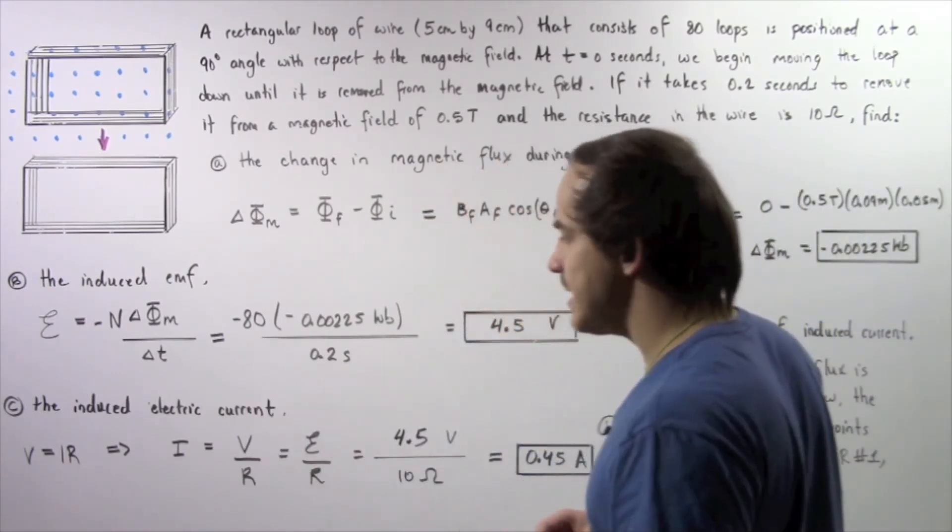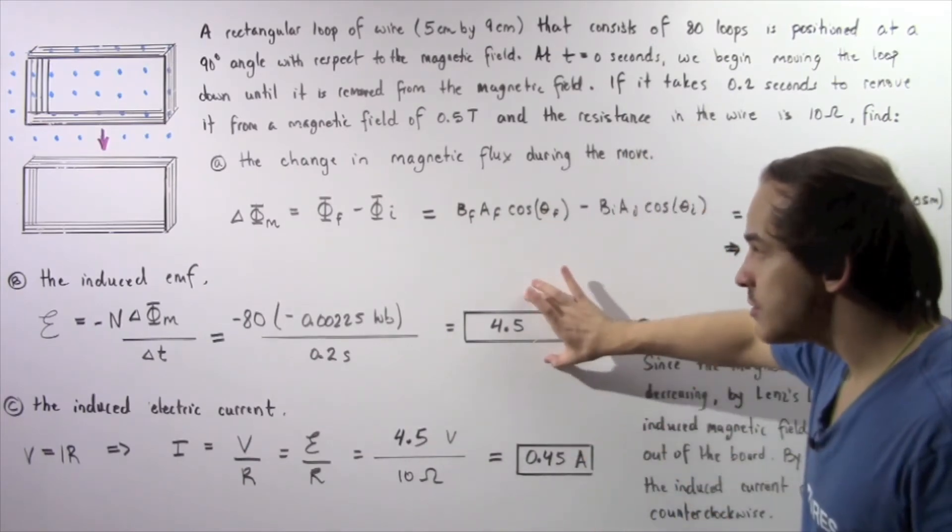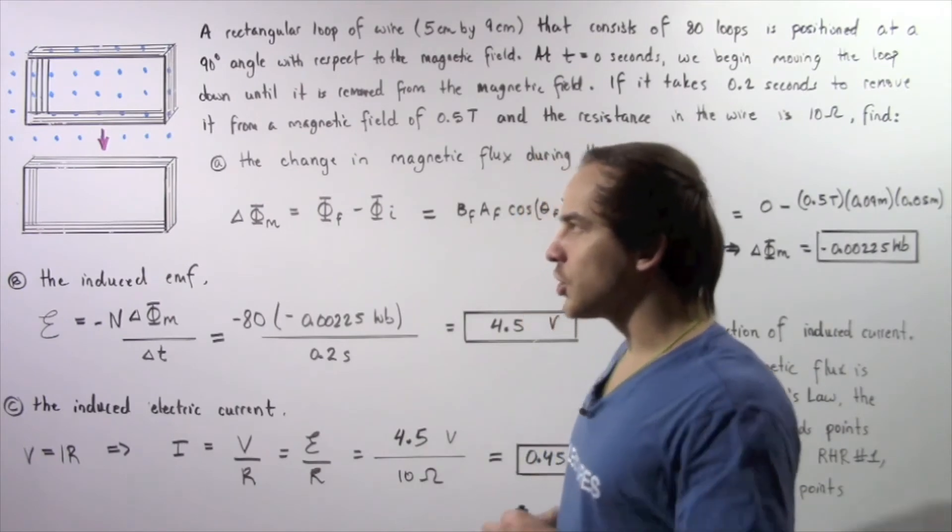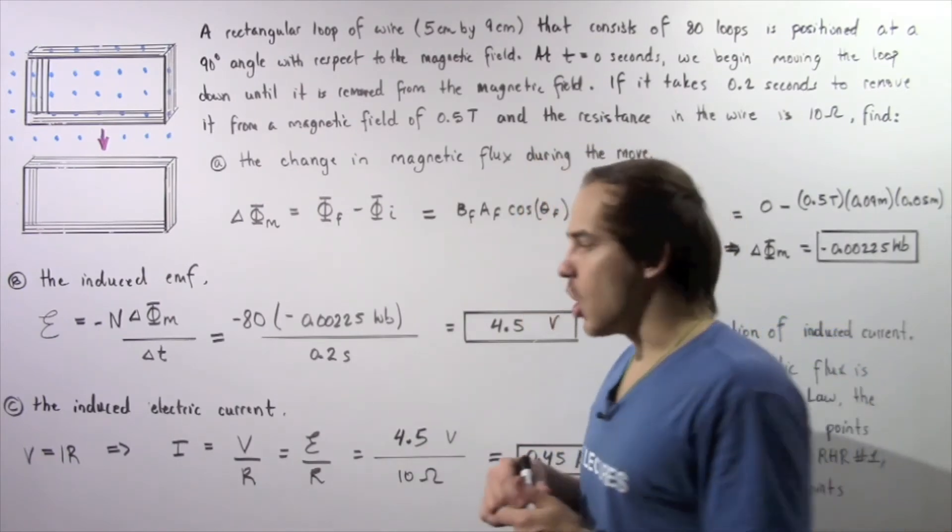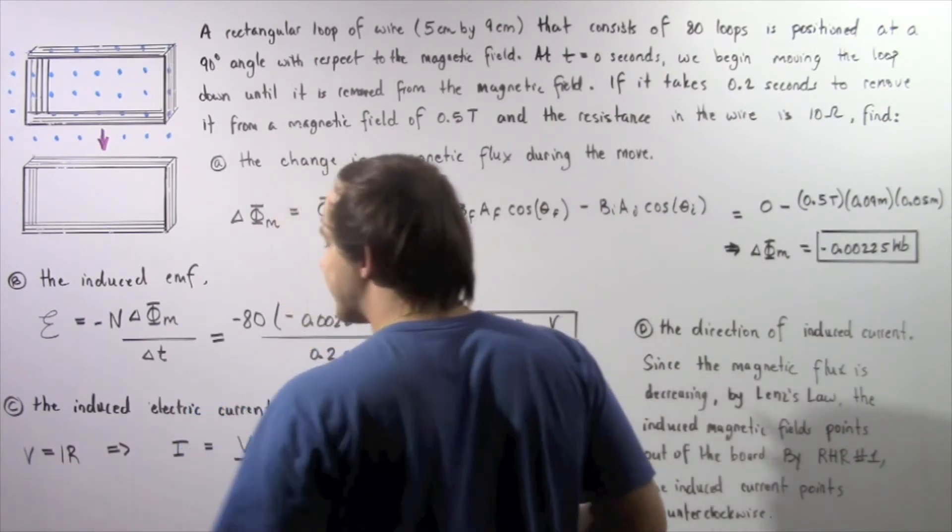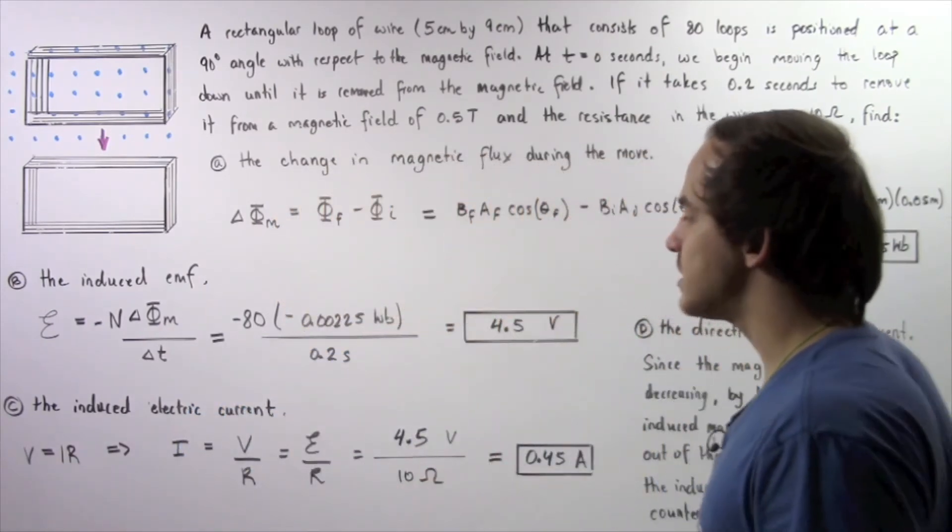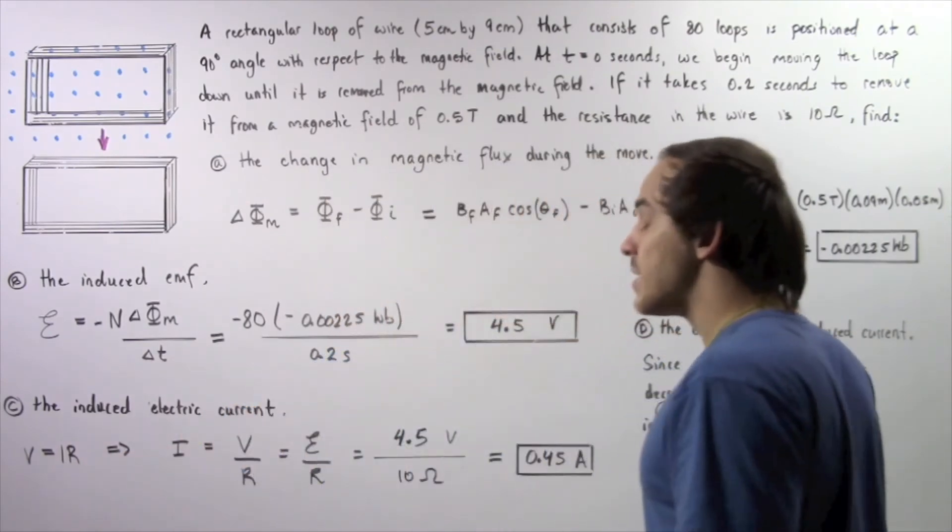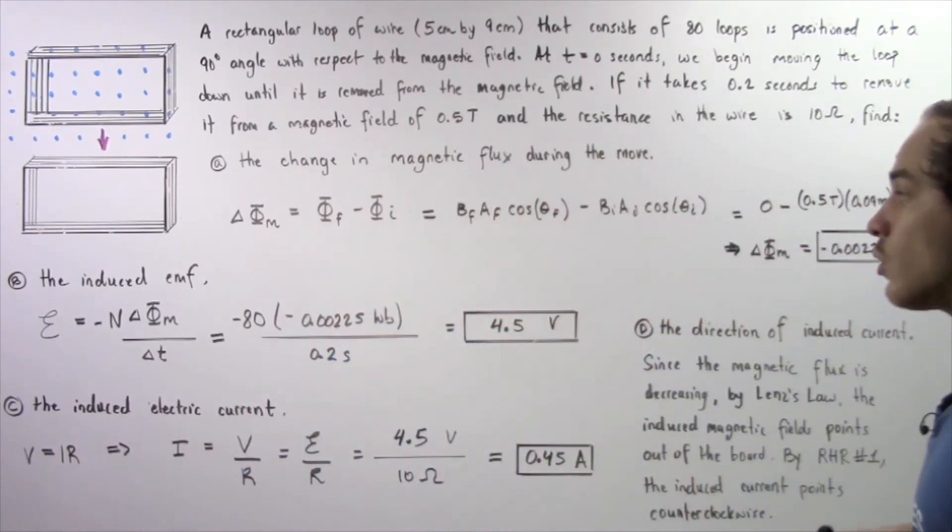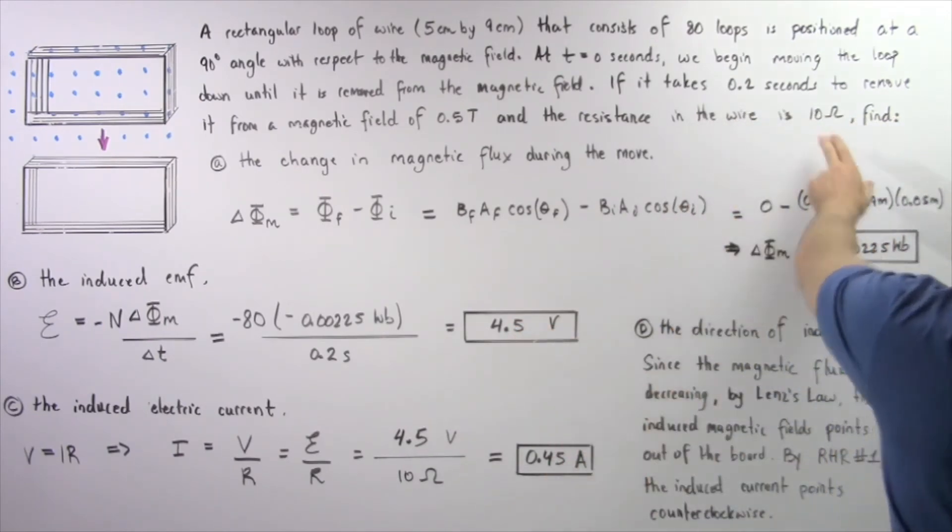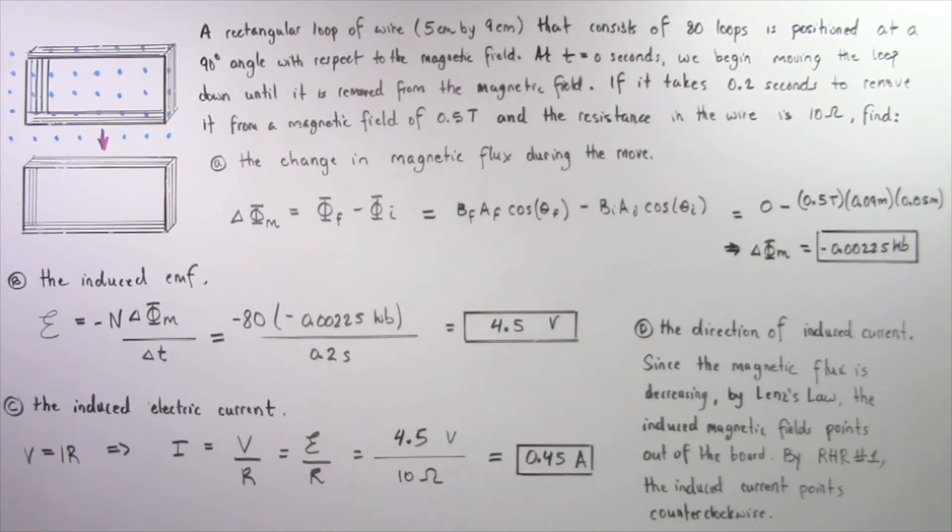Now let's move on to part C. Now we want to use this result to calculate the induced electric current. So we apply Ohm's law. The voltage is equal to the product of our current and our resistance V equals IR. So we rearrange and solve for I.